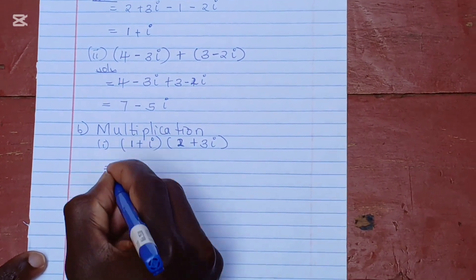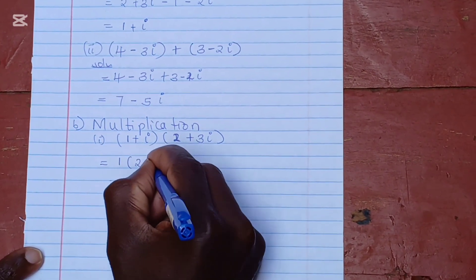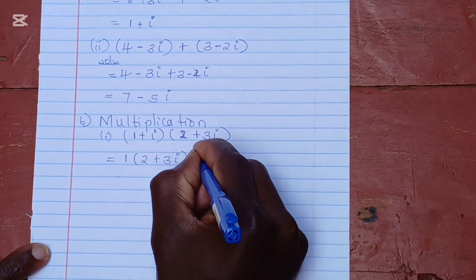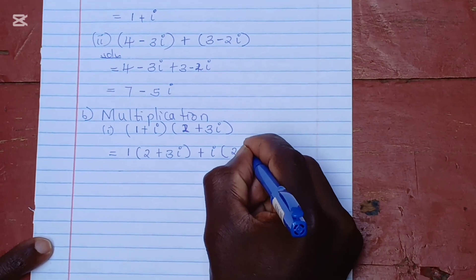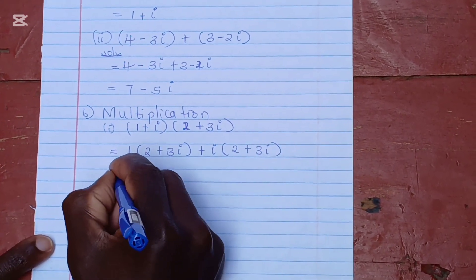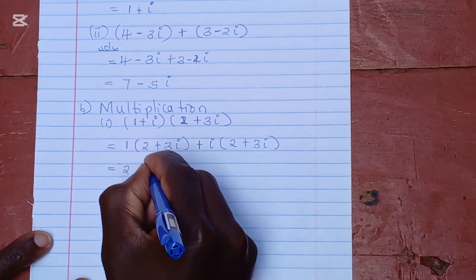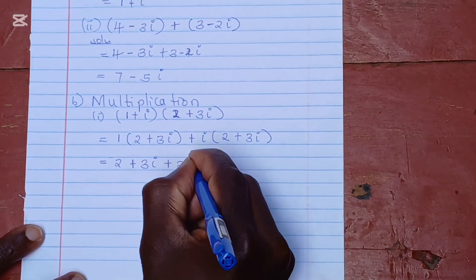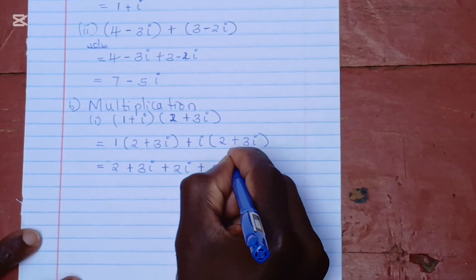This is going to be: multiply 1 by the second bracket, giving 2 plus 3i, then we add i multiplied by 2 plus 3i. Opening that bracket gives us 2 plus 3i plus 2i plus 3i squared.